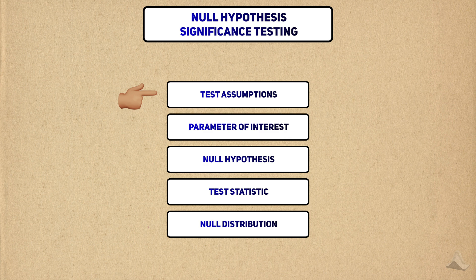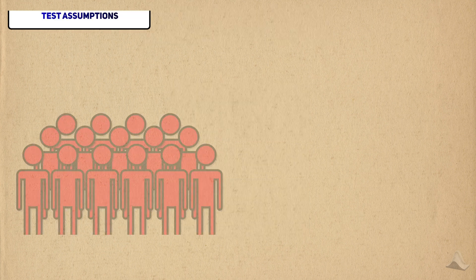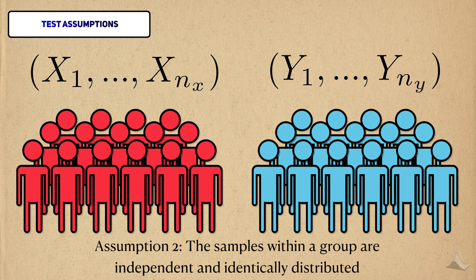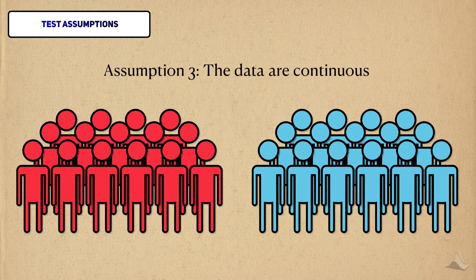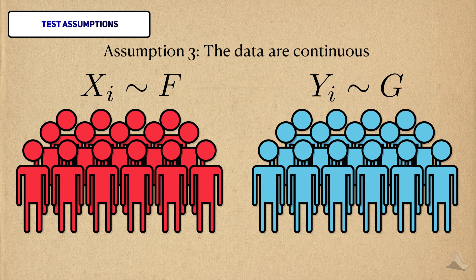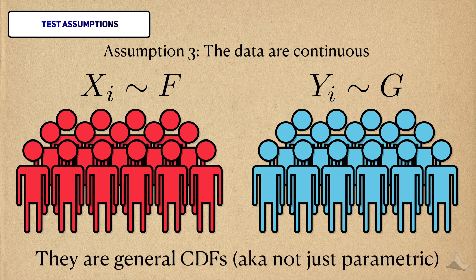First, we're going to go through the assumptions of the test, understand the parameter of interest, the null hypothesis, the test statistic, and the null distribution. The test assumes that we're collecting data from two independent populations. The samples themselves are also assumed to be independent and identically distributed. I'll assume the data to be continuous, and that the data from these populations each have their own distribution, which I'll denote as big F and big G. I'm using capital letters because I'm specifically referring to the cumulative distribution function, or CDF in this case. These CDFs can be general, and don't need to come from a parametric family.